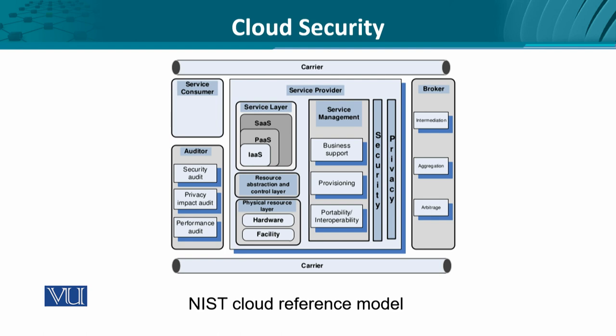The NIST cloud reference model contains the essential components which have to be addressed. The auditor is an entity that oversees security vulnerabilities, risk assessment, risk mitigation, and makes recommendations for service providers and CSPs. The auditor carries out both security audit and privacy impact audit, since privacy is the first thing compromised when data is published on the cloud. Tighter security means lesser attention to performance, so there is a trade-off.